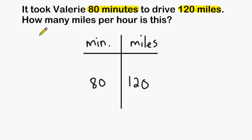We have to figure out how many miles per hour is this. In this problem they want us to write how many miles that Valerie drove per hour, but notice they gave us the unit of minutes. So one simple workaround for this is to write 60 minutes in our table. Now we have to write a number on this side of our table that will be equivalent to the rate of 80 to 120.